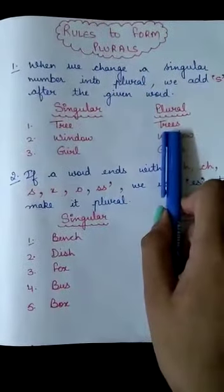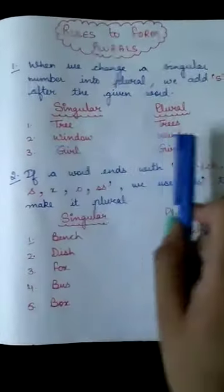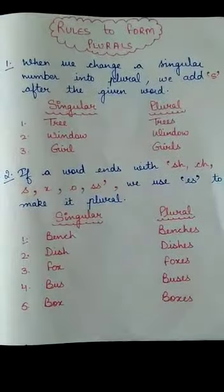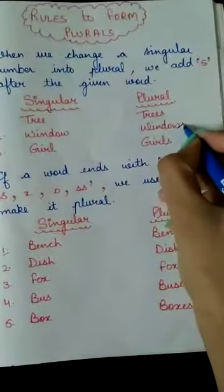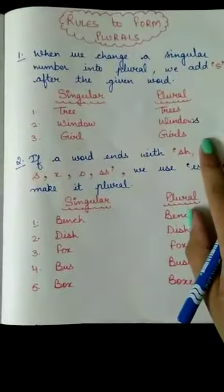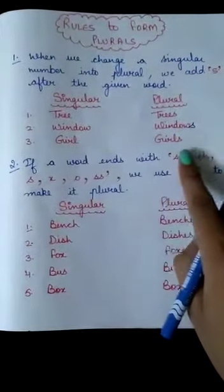We just put S in order to make plural form. Tree, trees. Window, windows. Ma'am has did one mistake over here. I just forgot to put S over there. Girl, girls.